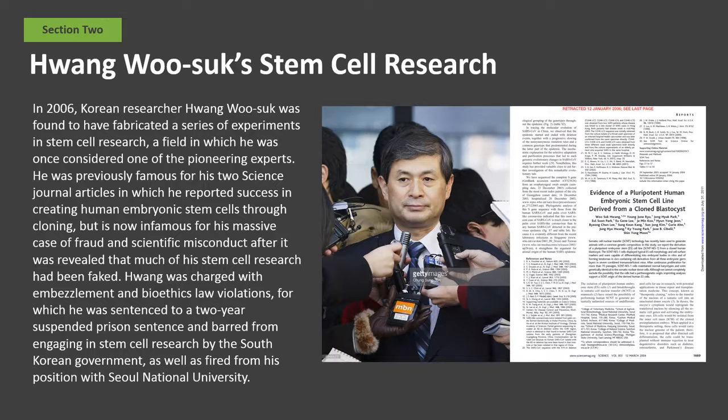Hwang was charged with embezzlement and bioethics law violations, for which he was sentenced to a two-year suspended prison sentence and barred from engaging in stem cell research by the South Korean government, as well as fired from his position with Seoul National University. However, Hwang continues to lead research in creating embryonic stem cell lines from cloned pig embryos, and his lab has been actively publishing manuscripts on PubMed.